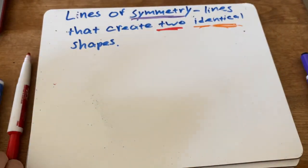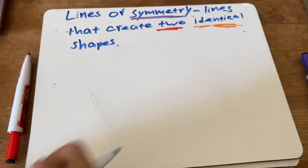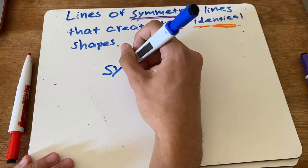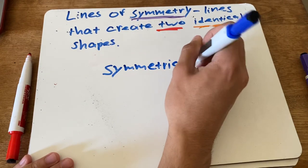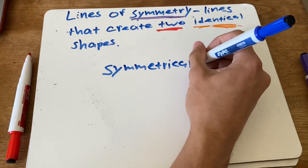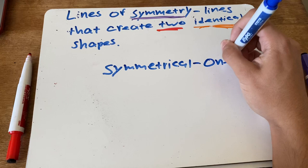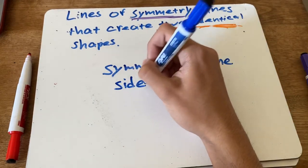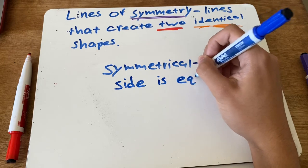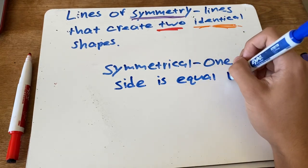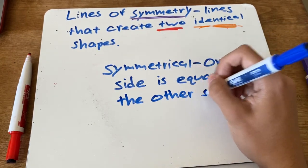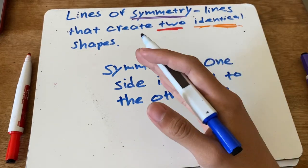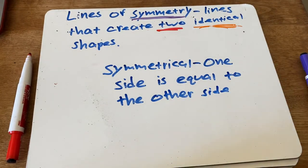Another word you might see on your worksheet is 'symmetrical.' Symmetrical and symmetry are the same thing — symmetrical just means that one side is equal to the other side. Think of a mirror: imagine you have a mirror there, and one side is going to have to look exactly the same as the other side.